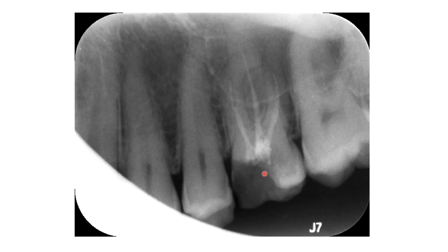For this case in particular, don't start by looking at the apex. For the mesiobuccal root, we will start by tracing the periodontal ligament space from the alveolar crest — this way, this way, this way. This is the radiolucency over here. We will see that this root is dilacerated in a distal direction and the filling is actually short.